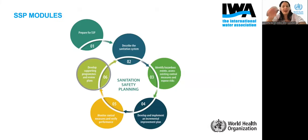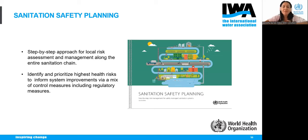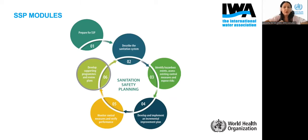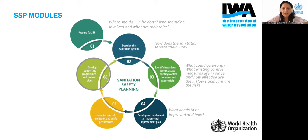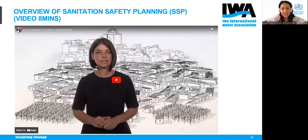The way SSP works is simple. First, we prepare for the process. Then we describe the sanitation system. Next, we identify hazards and hazardous events and conduct the health risk-based assessment. We use the resulting information to take decisions about what improvements are needed, then define monitoring mechanisms. Finally, we develop supporting programs and review plans. To illustrate how SSP works, let's watch the following video.